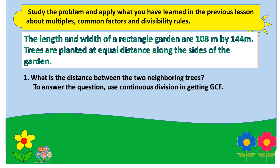So let us study the problem and apply what you have learned in the previous lesson about multiples, common factors, and divisibility rules. The length and width of a rectangular garden are 108 meters by 144 meters. Trees are planted at equal distance along the sides of the garden. Question number one: What is the distance between the two neighboring trees? To answer the question, we use continuous division in getting the GCF. But first, we have to analyze the problem.